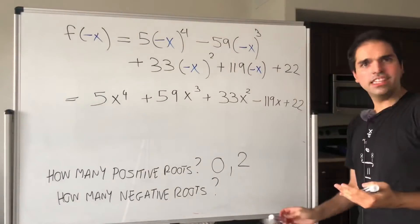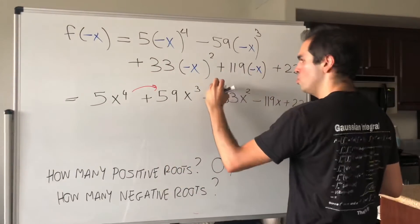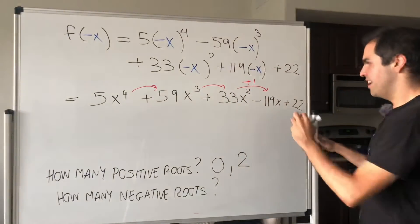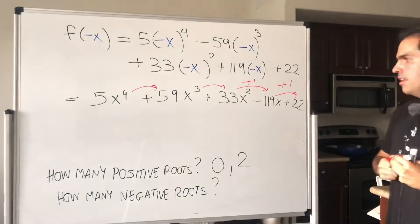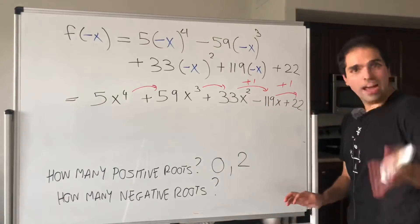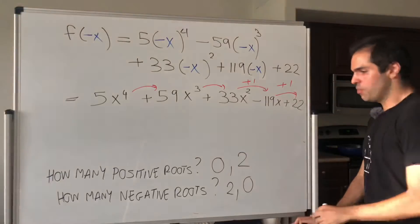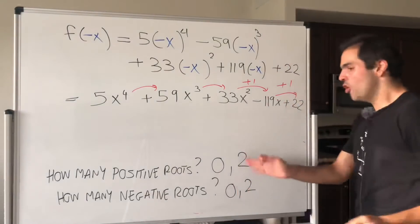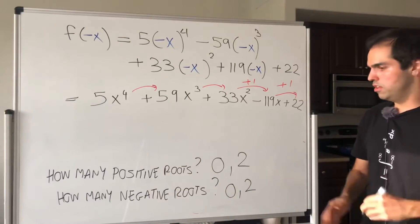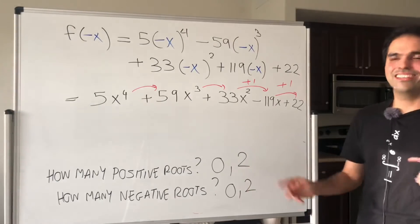Now let's count sign changes in f(−x): from 5 to 59 is positive to positive — no change. Positive to positive — no change. Then positive to negative — one change. Then negative to positive — one change. So two sign changes again, meaning there are either 2 or 0 negative roots. Same answer as for positive roots. So ideally, try to look for 2 positive and 2 negative roots.